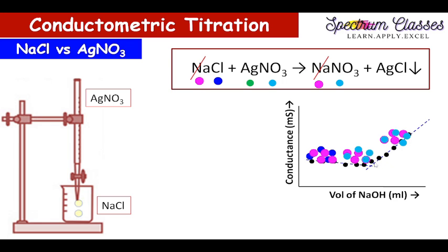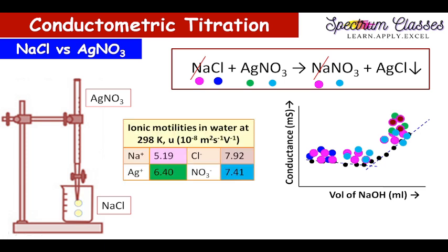So you can ask: if NaNO3 contributes this much conductance, then how does the conductance value increase here just because of NaNO3? No — this is not the conductance value just because of NaNO3; the contributing factor is AgNO3 also. Here, after the equivalence point, since no Cl− is there to react with Ag+, this Ag+ and NO3− are dissociated in the solution alongside NaNO3 with AgCl precipitate. So four different types of ions are present: Na+, NO3−, Ag+, and NO3−.